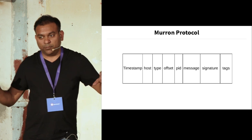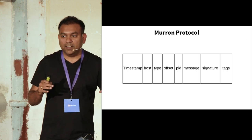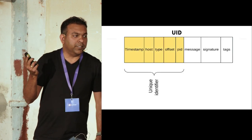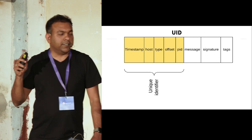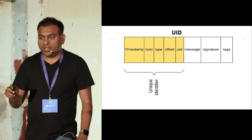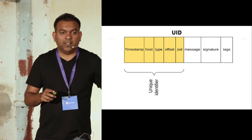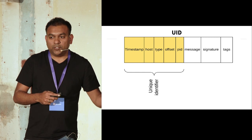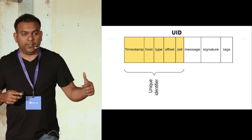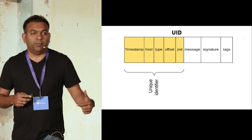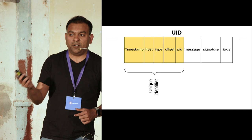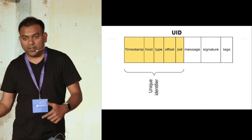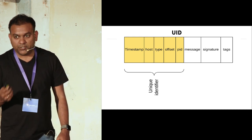The Marin Protocol is a flexible way to enforce a standard for how we ship logs into a pipeline. Taking timestamp, host, type, offset, and PID together — those five dimensions form a unique identification of an event. You can globally identify any particular event when it was generated. With this UID, you can reconstruct the whole event generation at any point in time, replay it, and understand how transformation happened through the event pipeline. That's how we build trust in the logs.